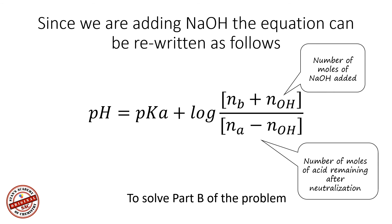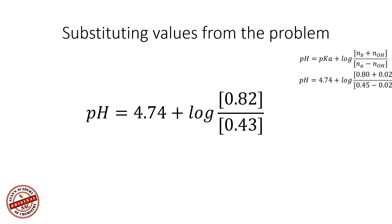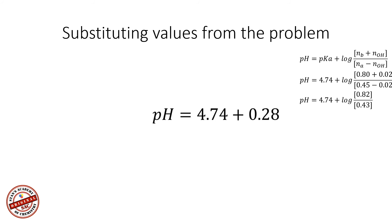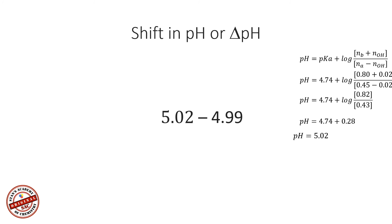Now substituting the values: the acetate ion moles are 0.80 and the acetic acid moles are 0.45. We added 0.02 moles of sodium hydroxide, so the moles of base increase and moles of acid decrease by 0.02. The equation becomes: pH = 4.74 + log(0.82 / 0.43). Solving log(0.82 / 0.43) ≈ 0.28, giving a final pH of 5.02. The original pH was 4.99, so the shift in pH, ΔpH, is 0.03.